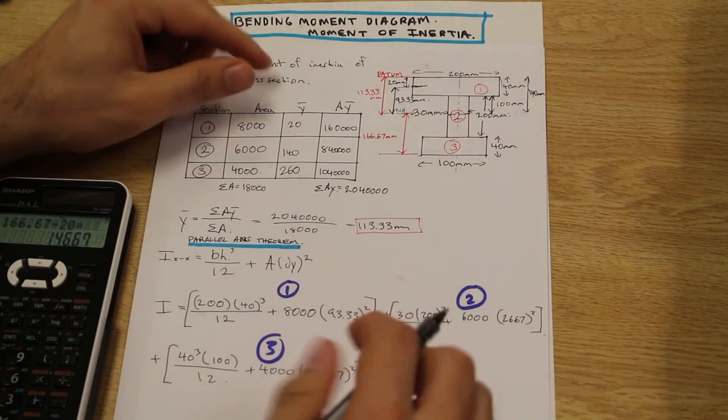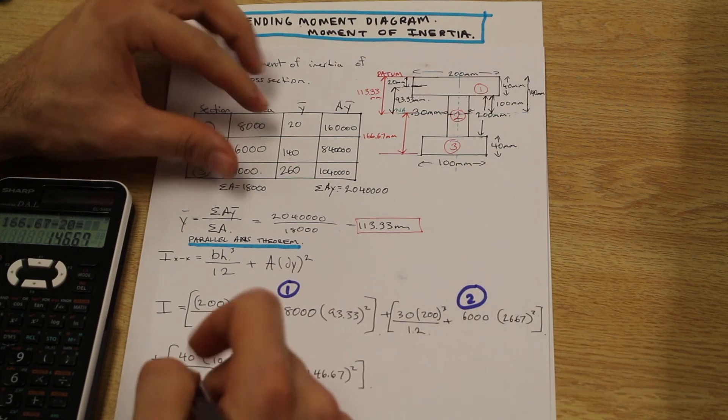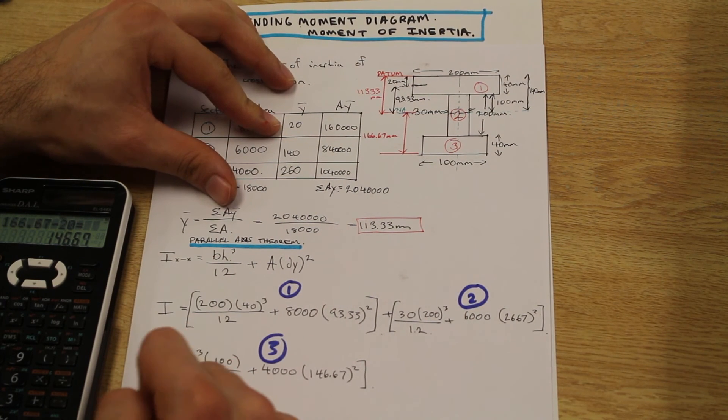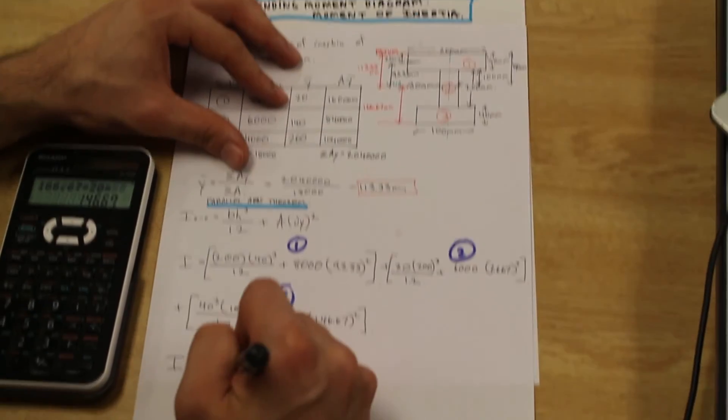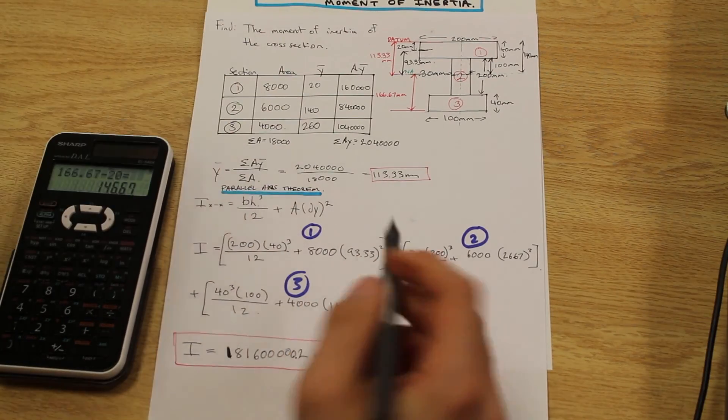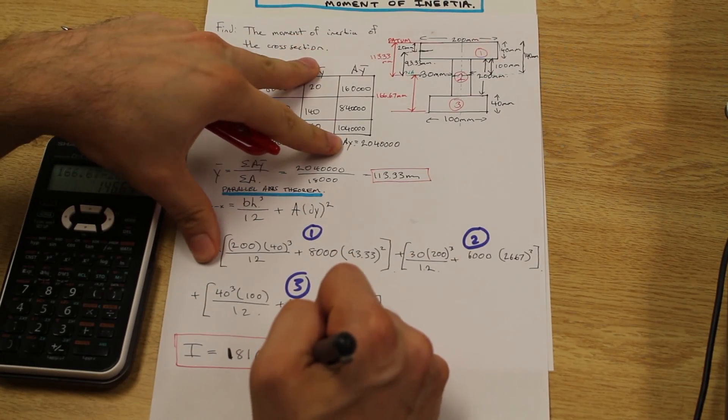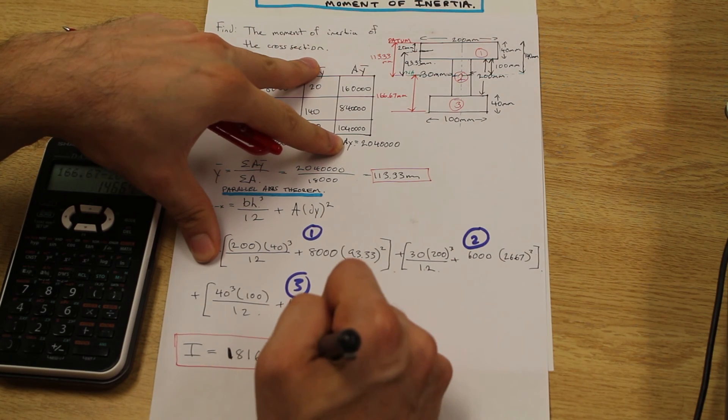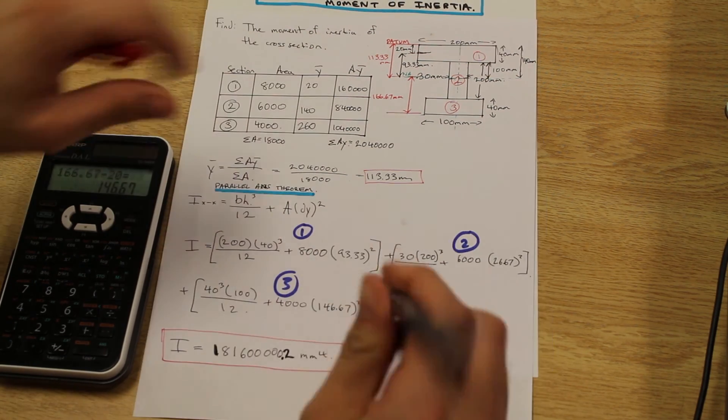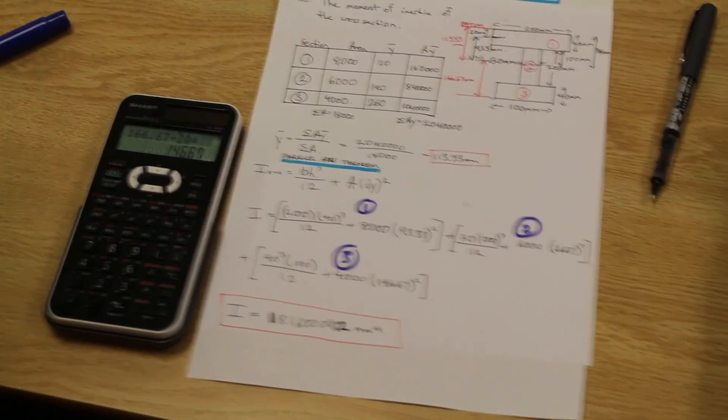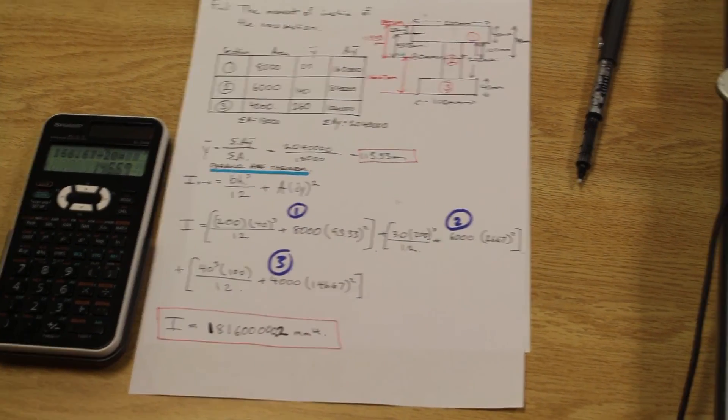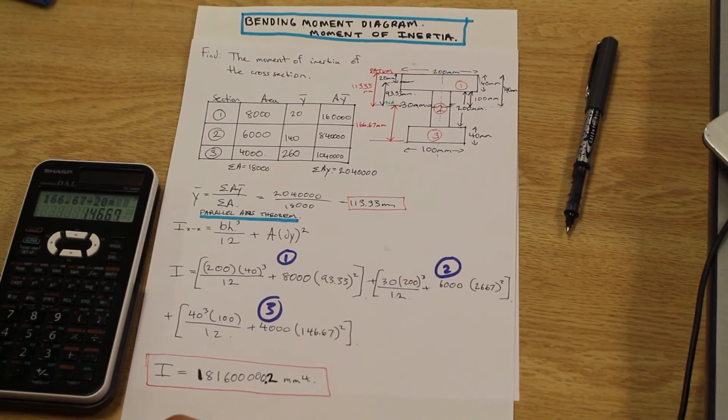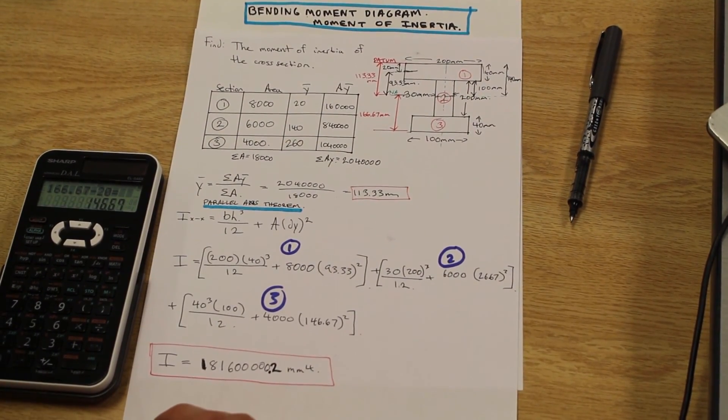Now all we need to do to complete this and get the moment of inertia about the x-axis is we just need to calculate that, and it ends up being... there we go. So I hope that's clear. That is our moment of inertia. And yeah, in the next video we're going to see how to apply this moment of inertia to calculate the flexural stresses in the beam.